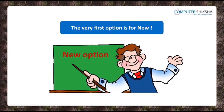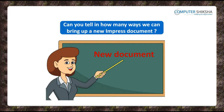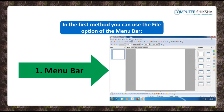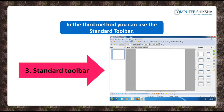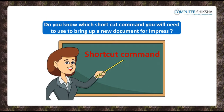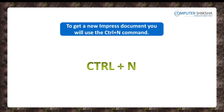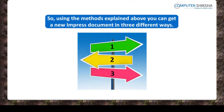The very first option is for New. Using the New option, you can get a new document of Impress. You can bring up a new Impress document in three ways: using the File option of the menu bar, using the shortcut command, or using the Standard Toolbar. The shortcut command to bring up a new document for Impress is Ctrl+N.